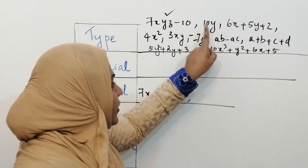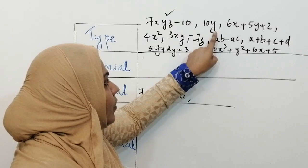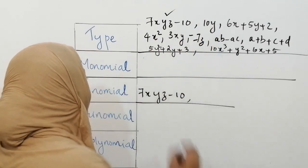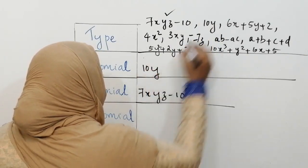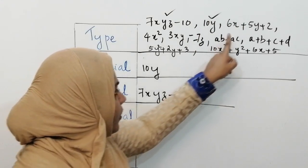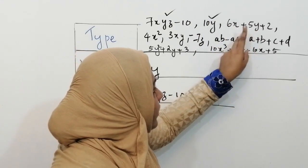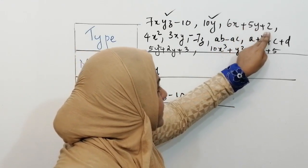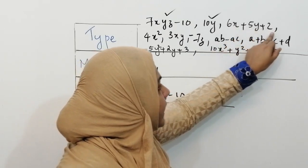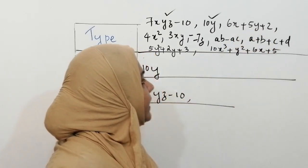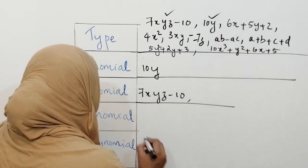Next, 6x plus 5y plus 2 is an algebraic expression with three terms separated by plus signs, so it is under trinomial.